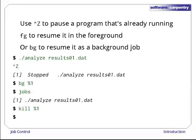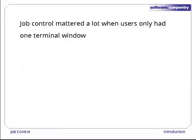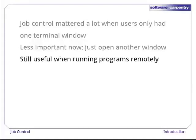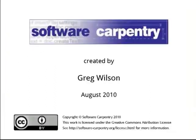This has the same effect as bringing it to the foreground and then typing ctrl-C. Job control was important when users only had one terminal window at a time. It's less important now — if we want to run another program, it's easy enough to open another window and run it there. However, these ideas and tools are making a comeback, as they're often the easiest way to run and control programs on remote computers elsewhere in the network. In a future episode, we'll take a look at how we can do that securely. First, though, we need to look at shell variables.